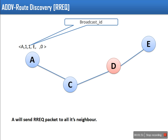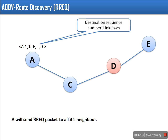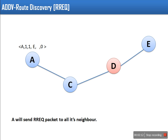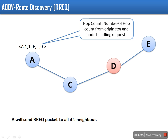The third field is the broadcast ID, which is increased with every route request packet — in the next packet this will be 2. Then destination address, and destination sequence number — this field is left empty because initially A does not have any information about E. The last field is the hop count. This is the hop count from the originator to the node handling the request, so initially it is 0 since both the originator and current node are A.